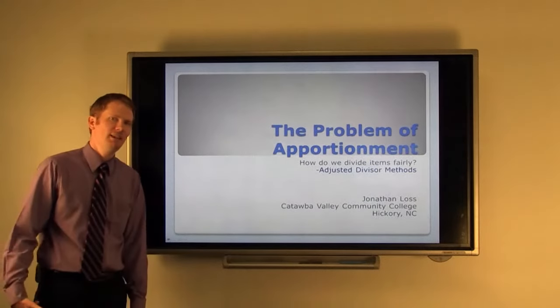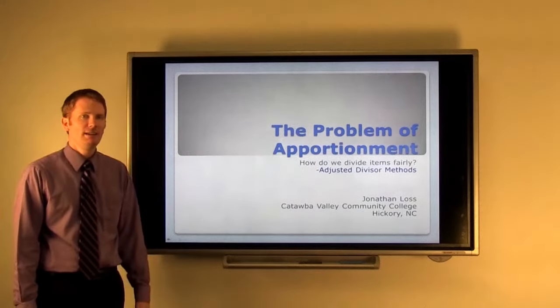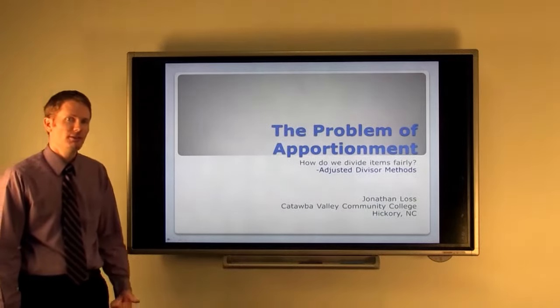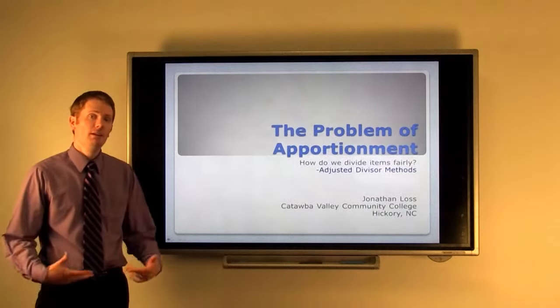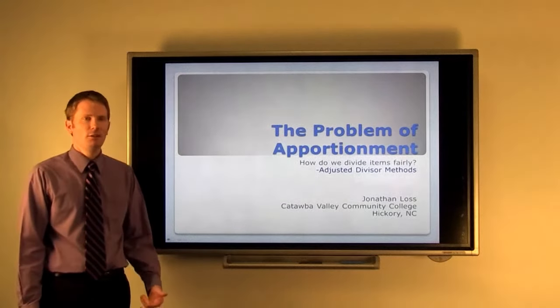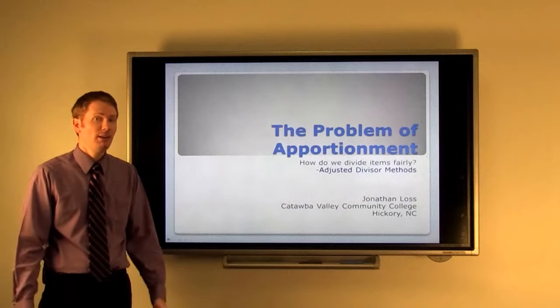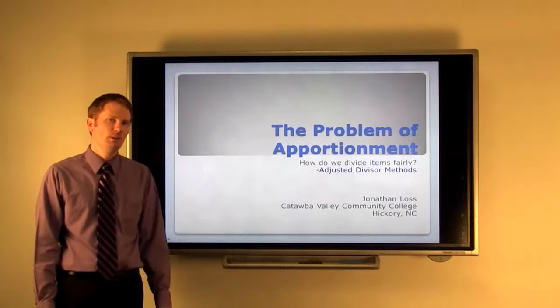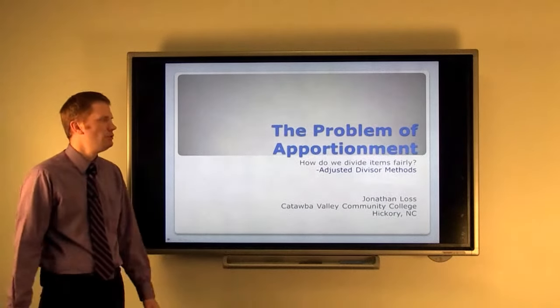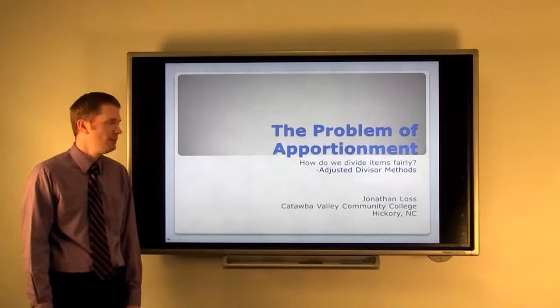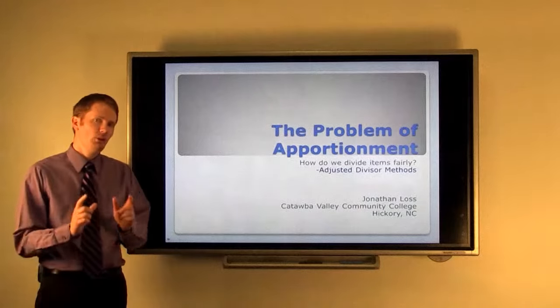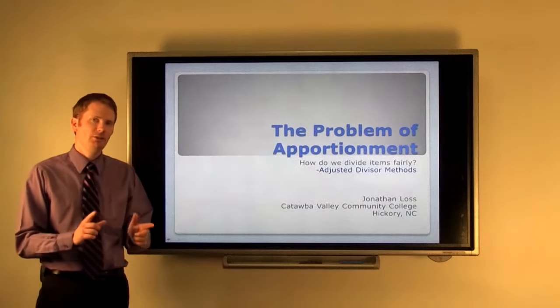Hello again. When we last left off we were talking about Alexander Hamilton's method for apportioning representatives to our U.S. House of Representatives when the country was first founded. In this video we're going to look at three other guys you probably have heard of and methods that they suggested we use instead. All three of these methods are what we call adjusted divisor methods. It means we do not use the standard divisor that Alexander Hamilton proposed but we start from that point and adjust as needed.